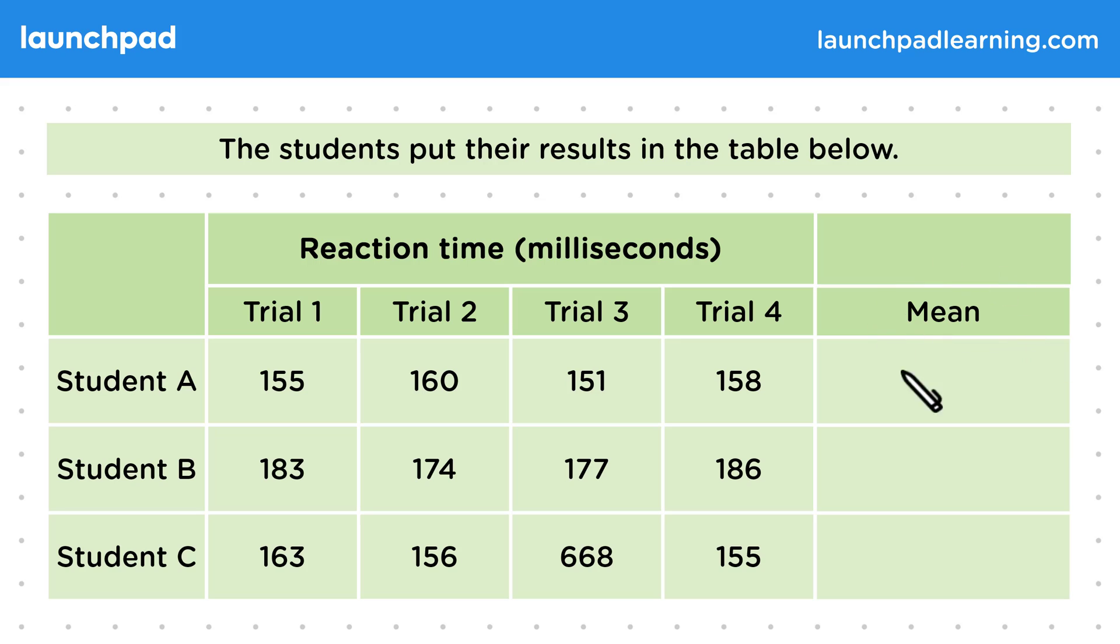If we add a mean column on the end of this table, we can calculate a mean reaction time for each student. This will make the comparison much easier because then we have just one value per student, rather than four.